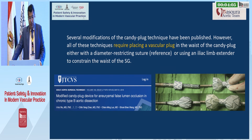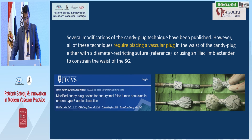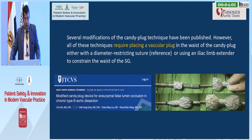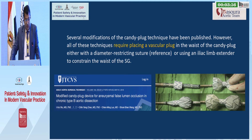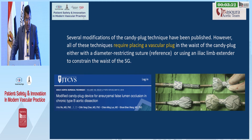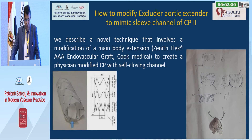Several modifications of the candy block technique have been published. However, all of these techniques require placing a vascular plug in the waist of the candy plug, either with a hemostasis-restricting suture or using an iliac limb extender to constrain the waist of the stent graft.